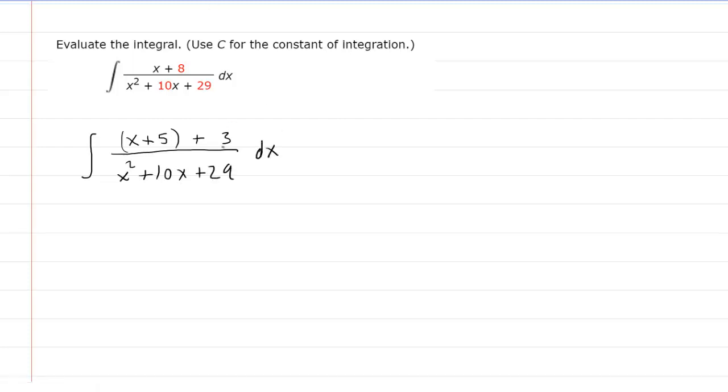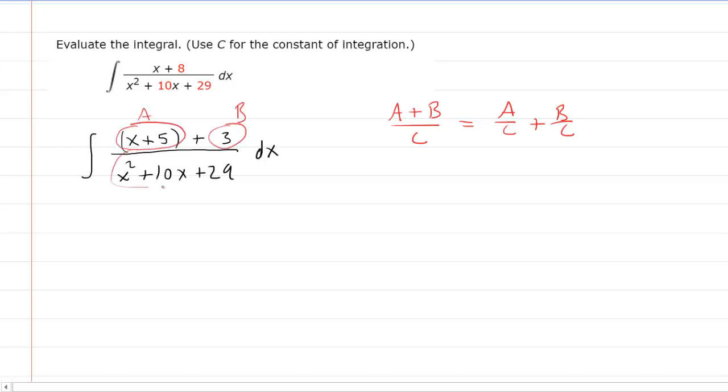The next thing we're going to do is split the numerator up into two. So we all know that if we have a fraction such as a plus b over c, we can rewrite that as a over c plus b over c. So we can treat this x plus 5 as our a, this would be our b, and then the entire denominator would be our c. Following this split up rule, we would have x plus 5 over x squared plus 10x plus 29 dx plus another integral of 3 over x squared plus 10x plus 29 dx.